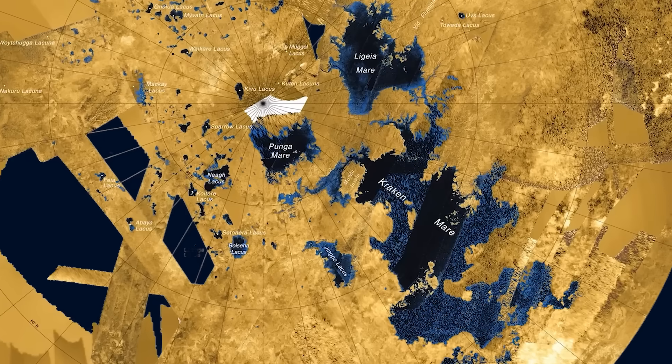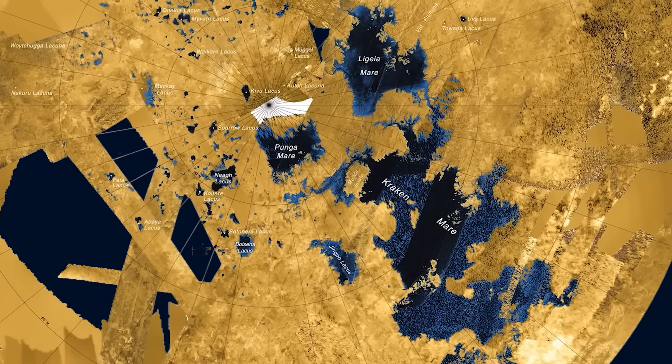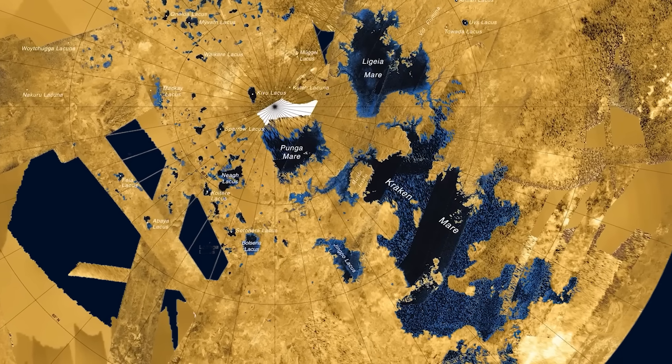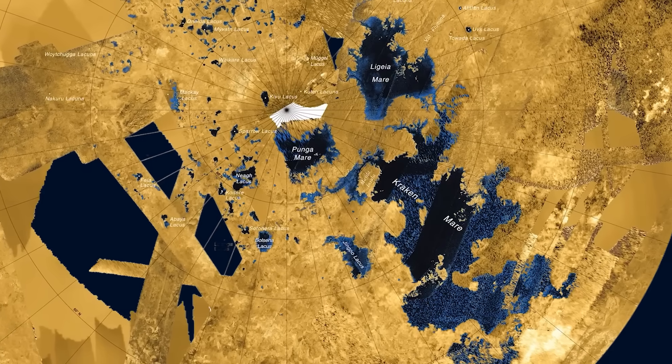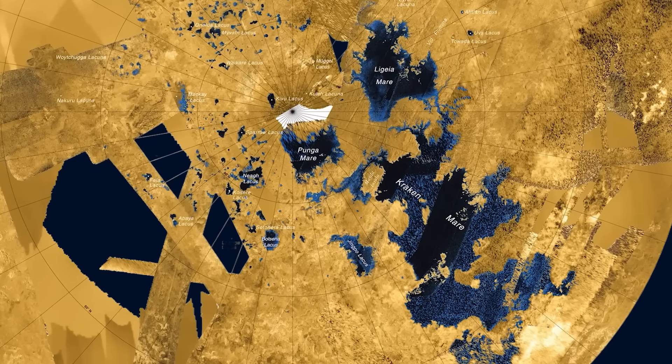The result is flowing rivers, lakes, and seas across the surface of Titan, making it the only known world aside from the Earth that has a stable liquid on its surface.